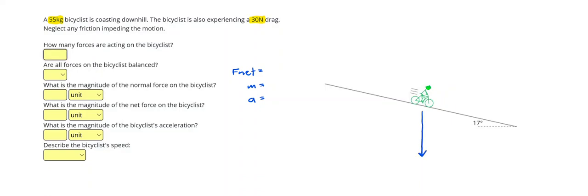Even though the hill is slanted, make sure you draw that weight straight down. Then we have a normal force from the surface. Since the surface is slanted, that normal force is going to slant diagonally up to the right perpendicular to the surface. We also have a drag acting back behind the bicyclist in the same direction as those motion lines.